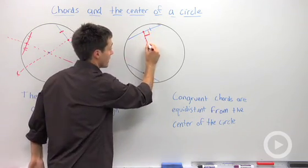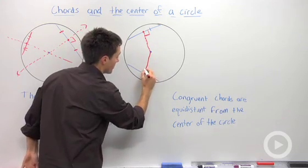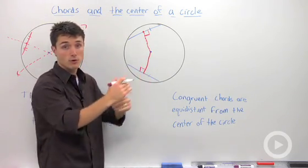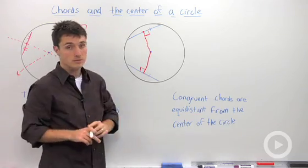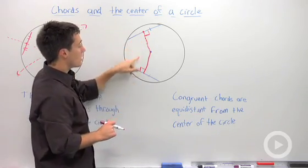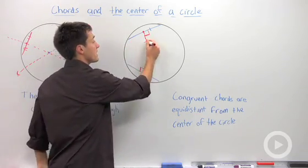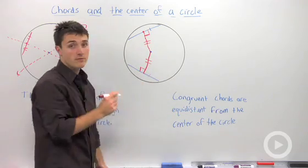So I'm going to draw a solid line here. This is the perpendicular distance, because we said the shortest distance between two points is along the perpendicular. If these chords are congruent, they will be the same distance away from the center of the circle.